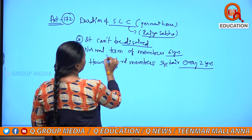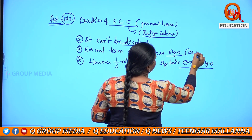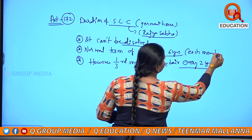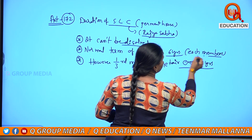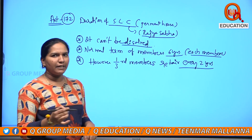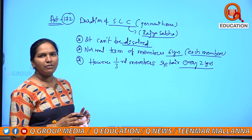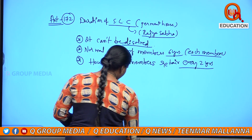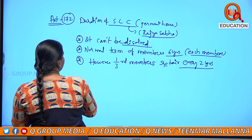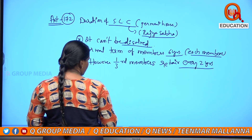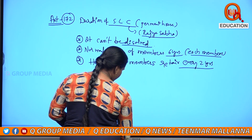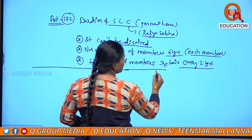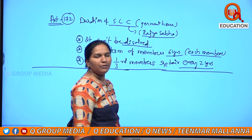The normal term of each member is 6 years. This is a permanent house — it cannot be dissolved. Article 172 deals with the term of both the Legislative Assembly and the Legislative Council.